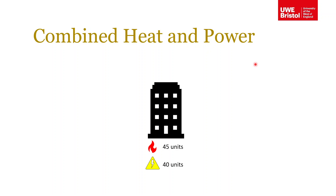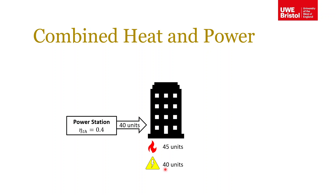I can illustrate this with an example. We're going to take this block of flats — shown schematically — and say that it requires 40 units of electrical energy and 45 units of thermal energy. That's the important point with combined heat and power: you need both the power — the electricity — and an application that also requires the heat. Accommodation is one such application.